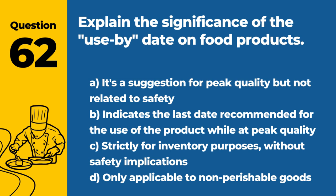Question 62. Explain the significance of the use-by date on food products. The answer is B: It indicates the last date recommended for the use of the product while at peak quality. It's important for managing food safety and quality.